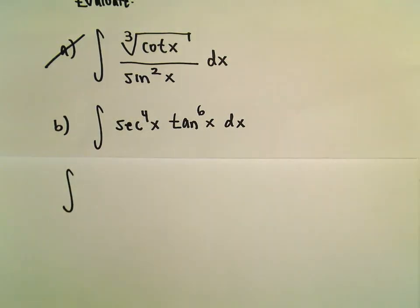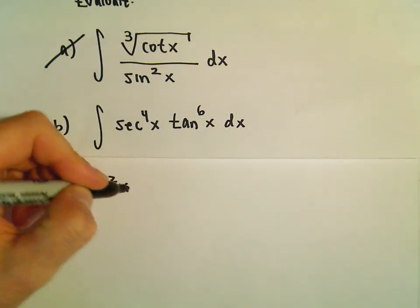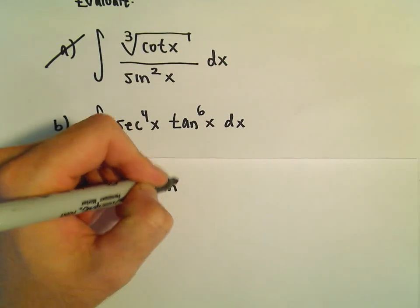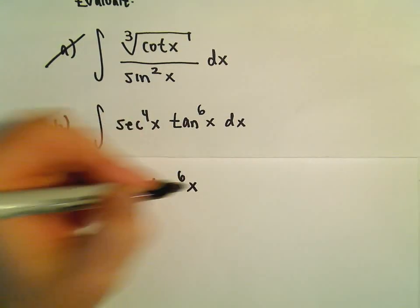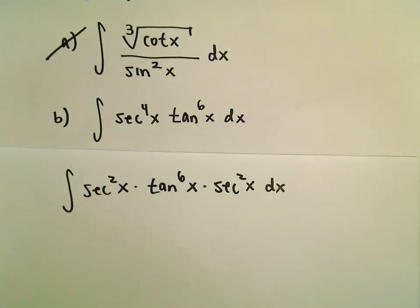but we can get rid of that just using our trig identity. So I'm going to write this as secant squared x times tangent to the sixth power of x, and then our other secant squared x I'm just going to put over here. Again, you don't have to do this step, but I like to write it out. It makes it a little bit clearer to myself.